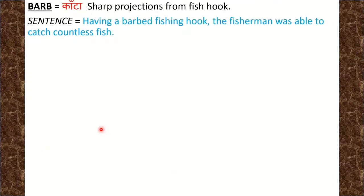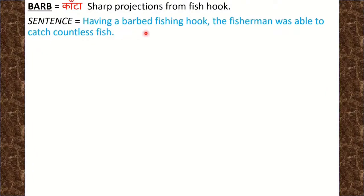Next word is Barb. Barb means काँटा, यानि sharp projection from a fish hook — जो fish hook के आगे लगा होता है. Sentence: Having a barbed fishing hook, the fisherman was able to catch countless fish. Fisherman ने बहुत सारी endless fish पकड़ी.